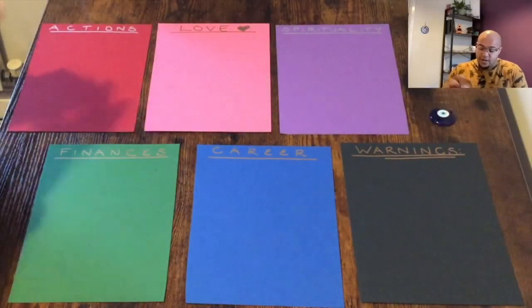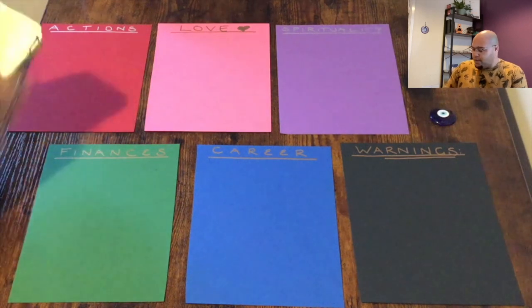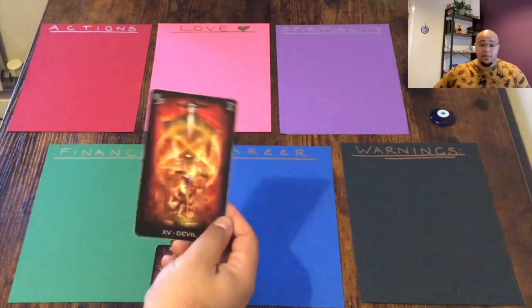So let's get straight into it. For your actions and options for 2024, you have, I don't know why I'm singing. So you've got the devil card, right?